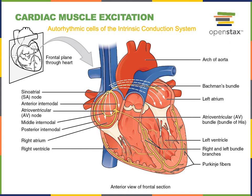These autorhythmic cells function as the pacemaker of the heart, generating the action potential that then spreads through the heart to stimulate contraction. There are autorhythmic cells throughout the intrinsic conduction system of the heart, which is shown in yellow in this illustration. All of the autorhythmic cells are capable of spontaneous depolarization to produce an action potential. However, the SA node contains autorhythmic cells that have the fastest rate of spontaneous depolarization, and therefore the SA node normally functions as the pacemaker of the heart.